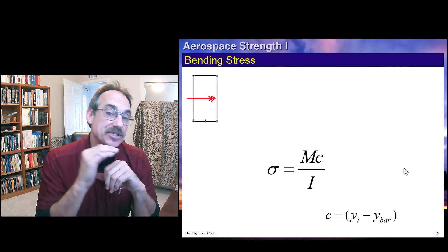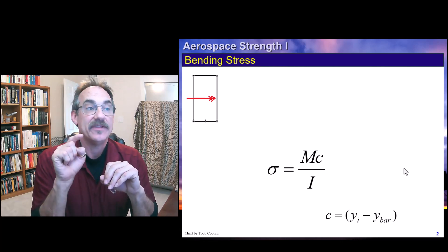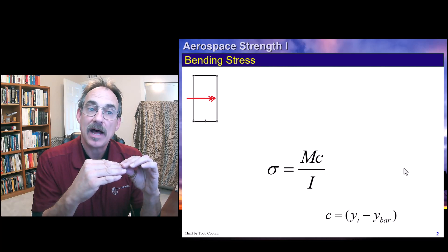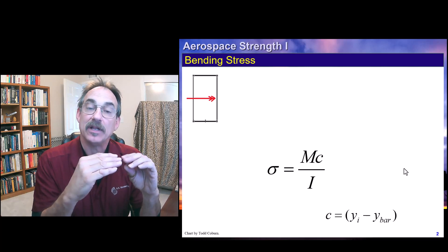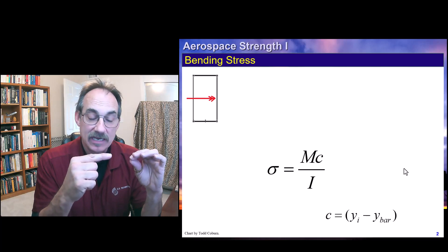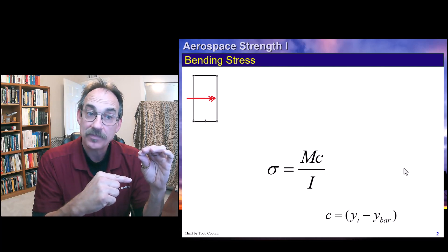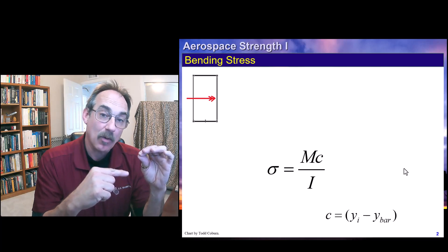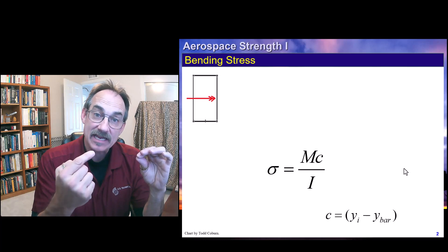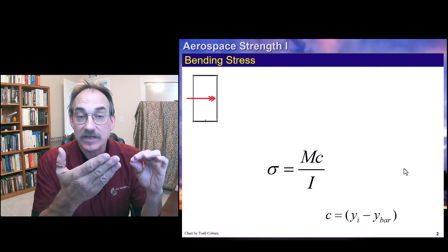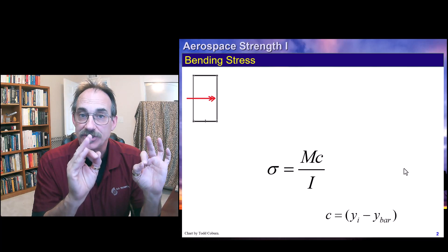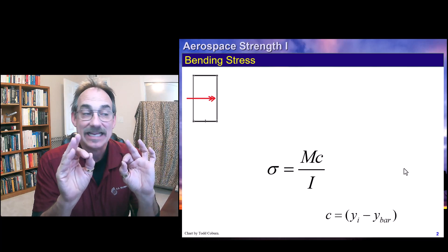If instead you wanted the stress at the bottom, you'd plug in the c value to the bottom from the neutral axis. That's below the centroid. That's going to be a negative value, where you plug in a value of 0 minus y bar, which is h over 2, gives you a negative h over 2, which also fixes your sign and shows that the stress is just mc over i.